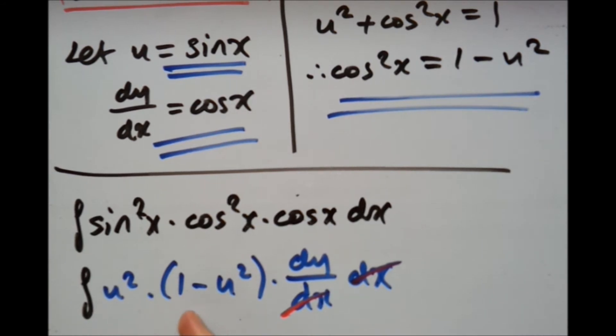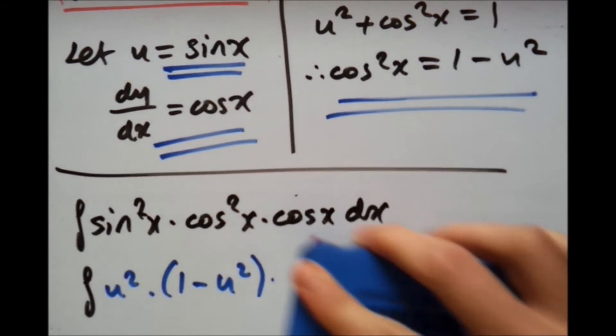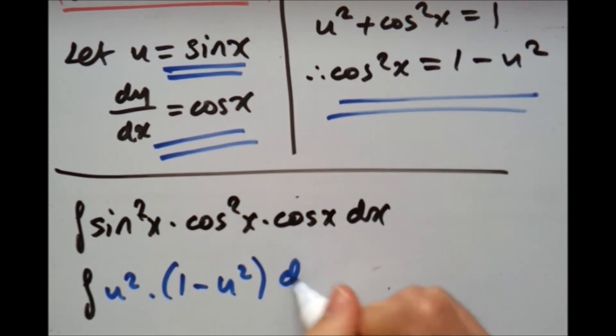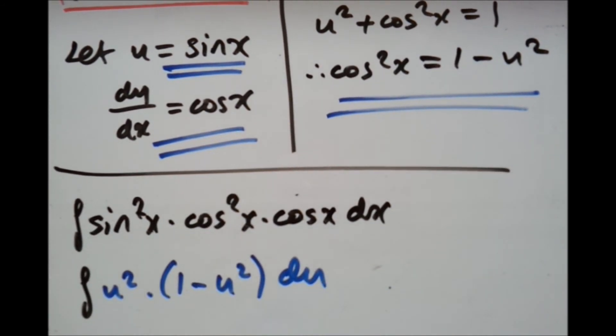Now we simply have U squared times 1 minus U squared with respect to U. So now this is obviously going to be pretty straightforward, so we can actually solve this ourselves. So let me just kind of clean this up a bit.